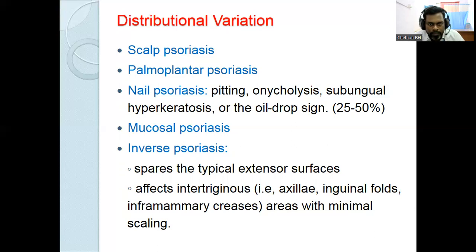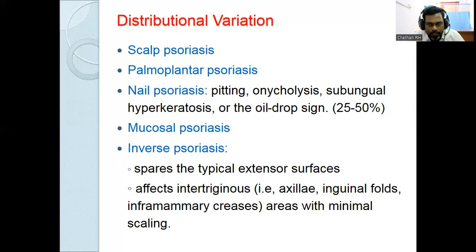In palmoplantar psoriasis, most common sites on the palms are the central palm, thenar eminence, and hypothenar eminence. On the soles, the most common sites are the instep areas, medial borders, and lateral borders of the foot. Lesions are well-defined scaly plaques associated with fissures — fissures are indicative of palmoplantar psoriasis and are absent in hand and foot eczema.